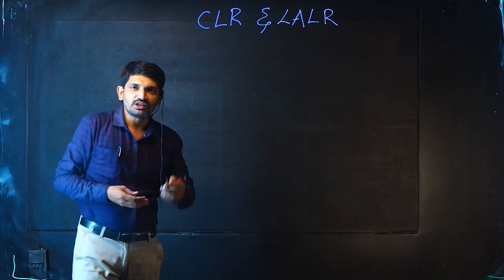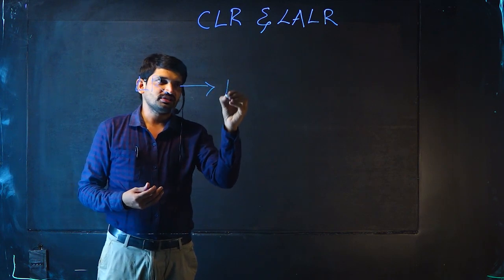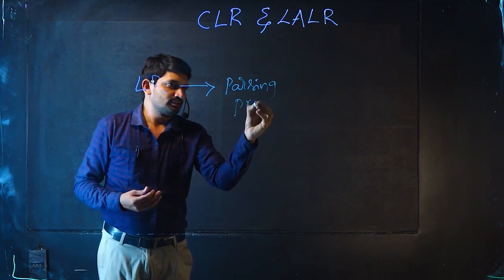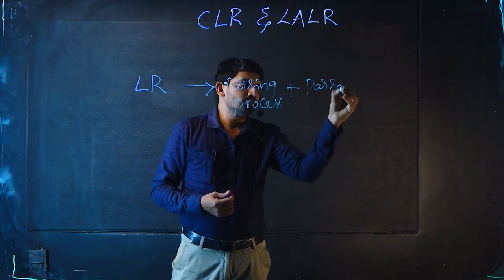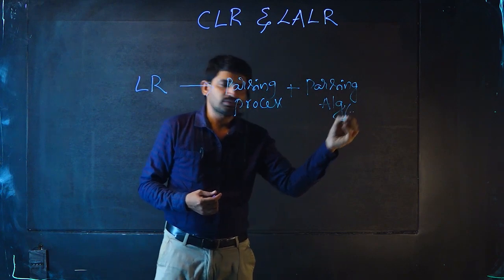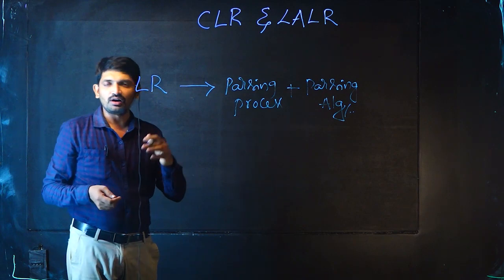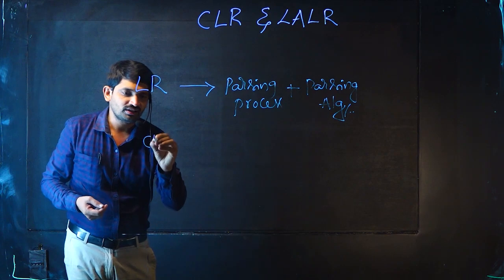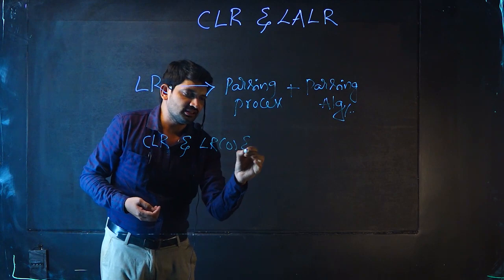In previous sessions, we discussed the LR parsing process. The LR parsing process and parsing algorithm are the same for all LR parsers. So what is the difference between CLR 1, LR 0, and SLR 1? The difference is in constructing the canonical items: LR 0 and SLR 1 use LR 0 canonical items, while CLR 1 uses LR 1 canonical items.